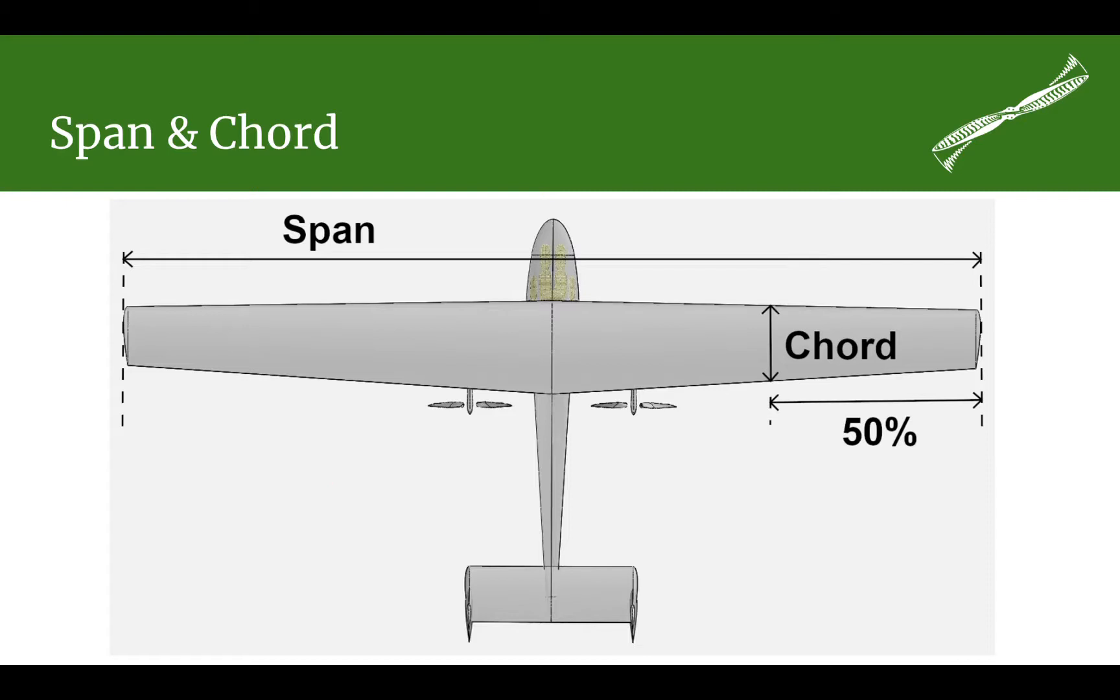The first things to talk about are the span and the chord. The span is defined as a distance from the tip of one flying surface, in this case a wing, to the other tip of the flying surface. It includes the fuselage area that the flying surface passes through. It also includes any housings such as engine housings or booms back to a tail. So span, tip to tip distance.